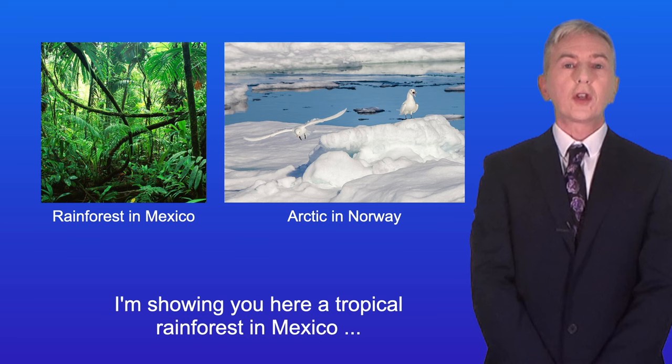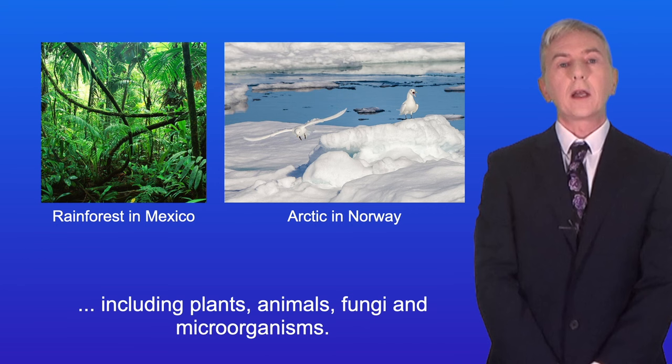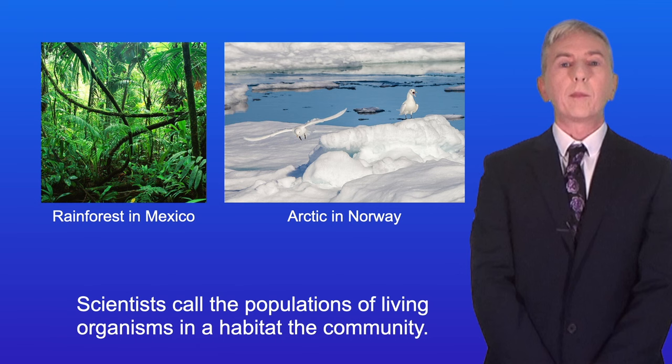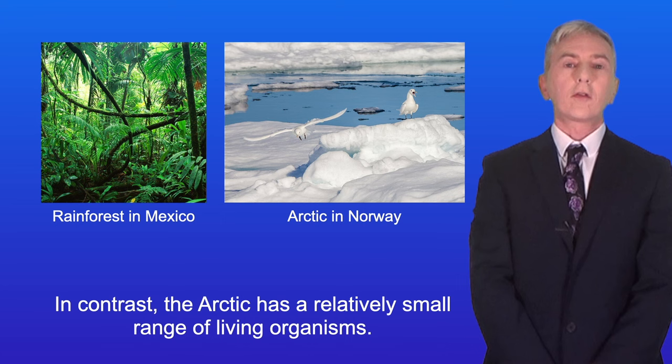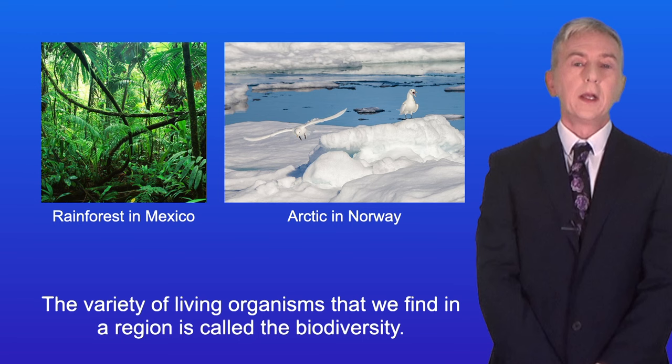I'm showing you here a tropical rainforest in Mexico and the Arctic off the coast of Norway. Tropical rainforests are extremely rich in living organisms, including plants, animals, fungi and microorganisms. Scientists call the populations of living organisms in a habitat the community. In contrast, the Arctic has a relatively small range of living organisms. The variety of living organisms that we find in a region is called the biodiversity, so rainforests have a rich biodiversity, whereas the Arctic has a relatively low biodiversity.